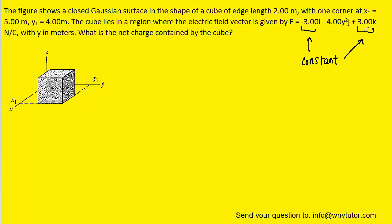This is negative 3, and then this is positive 3. Again, those are constant values, as opposed to the j-hat component, which has the variable y-squared in it. And the reason we emphasize the constant electric field vectors is for the following reason. Let's take a look at the electric field component in the i-hat direction. We recall that i-hat refers to the x-direction.